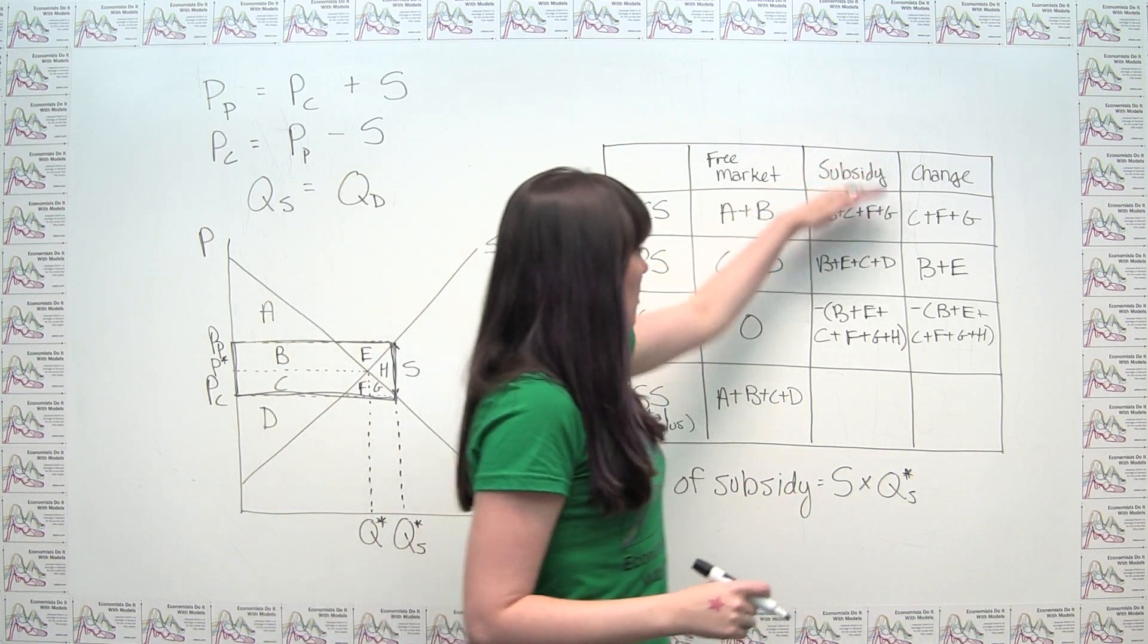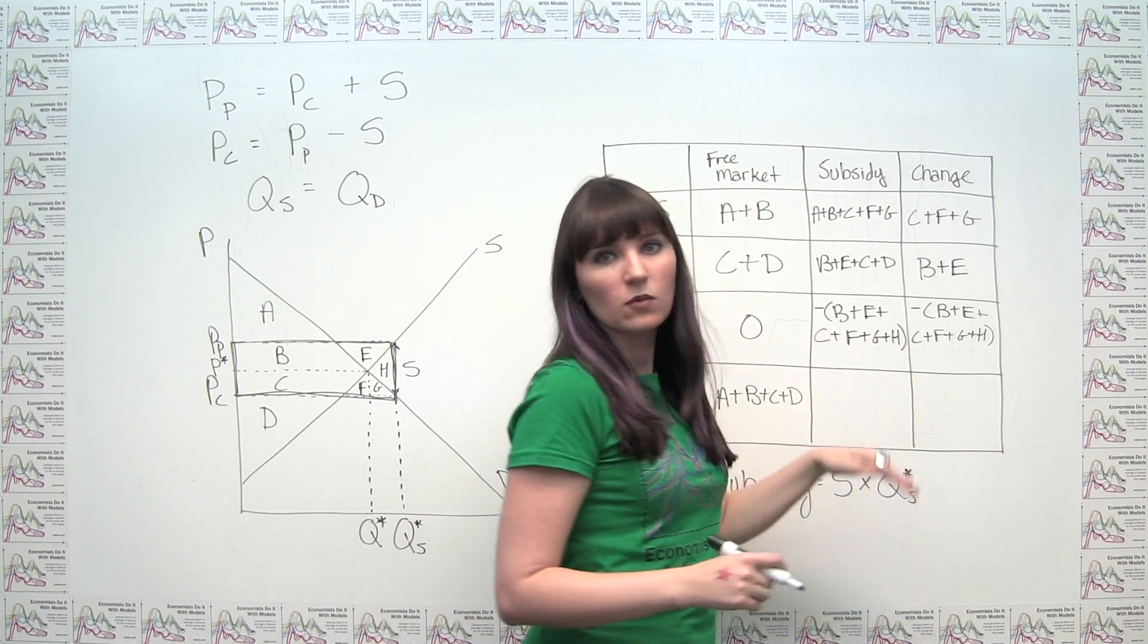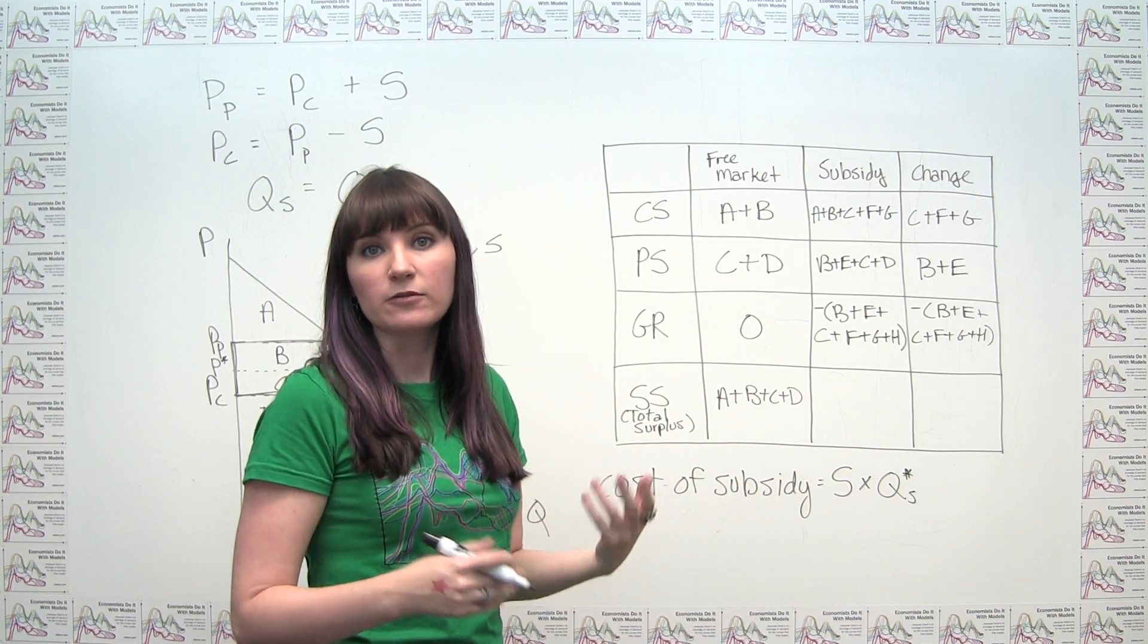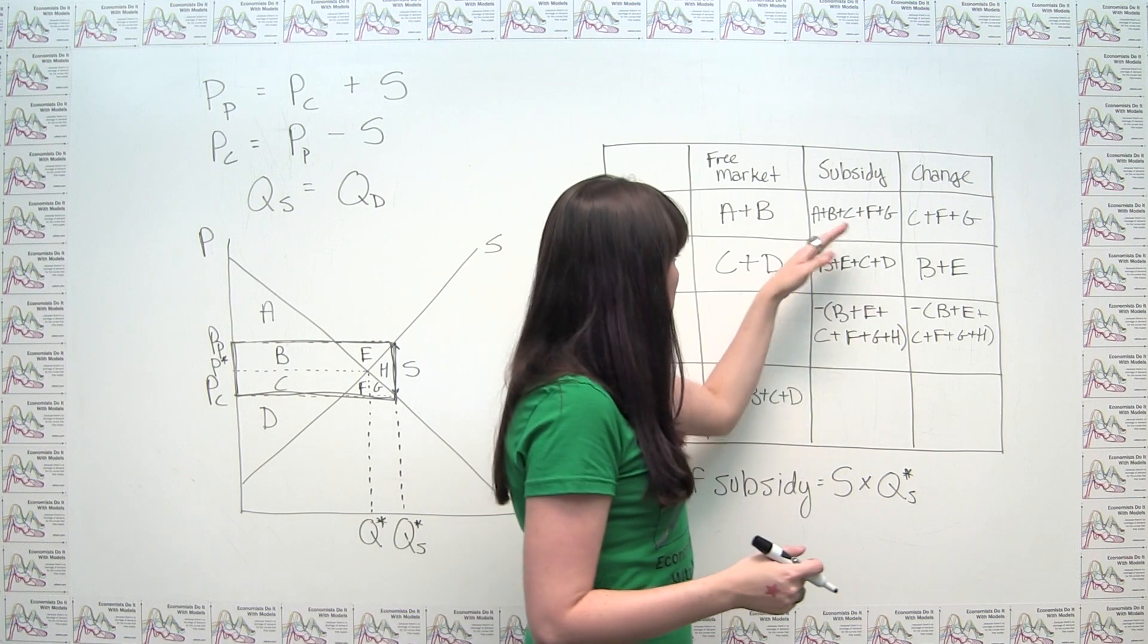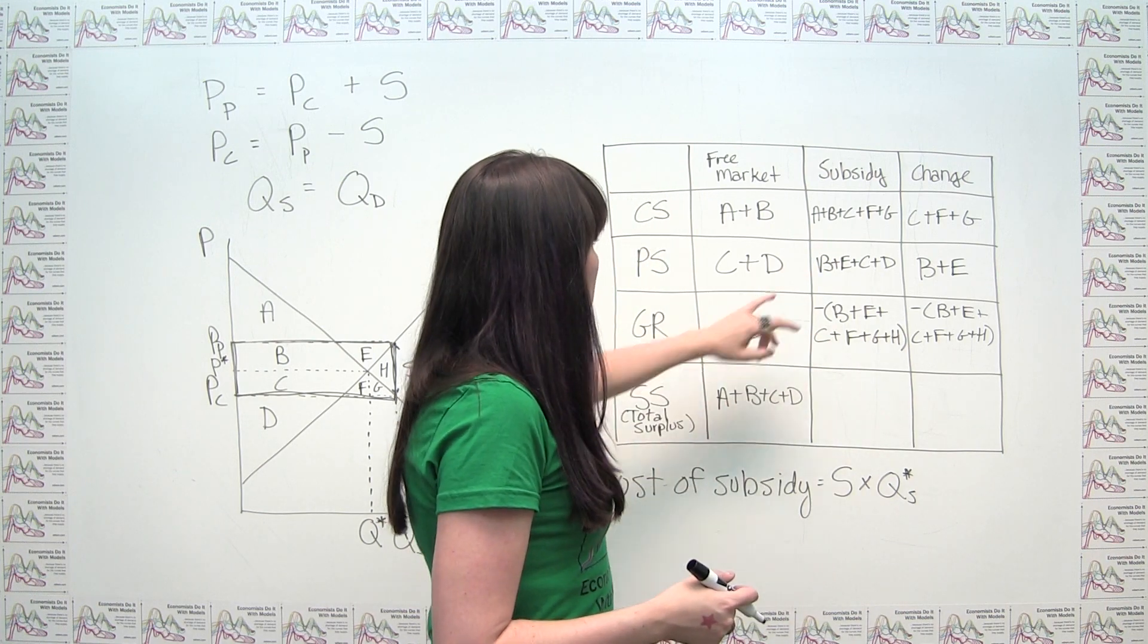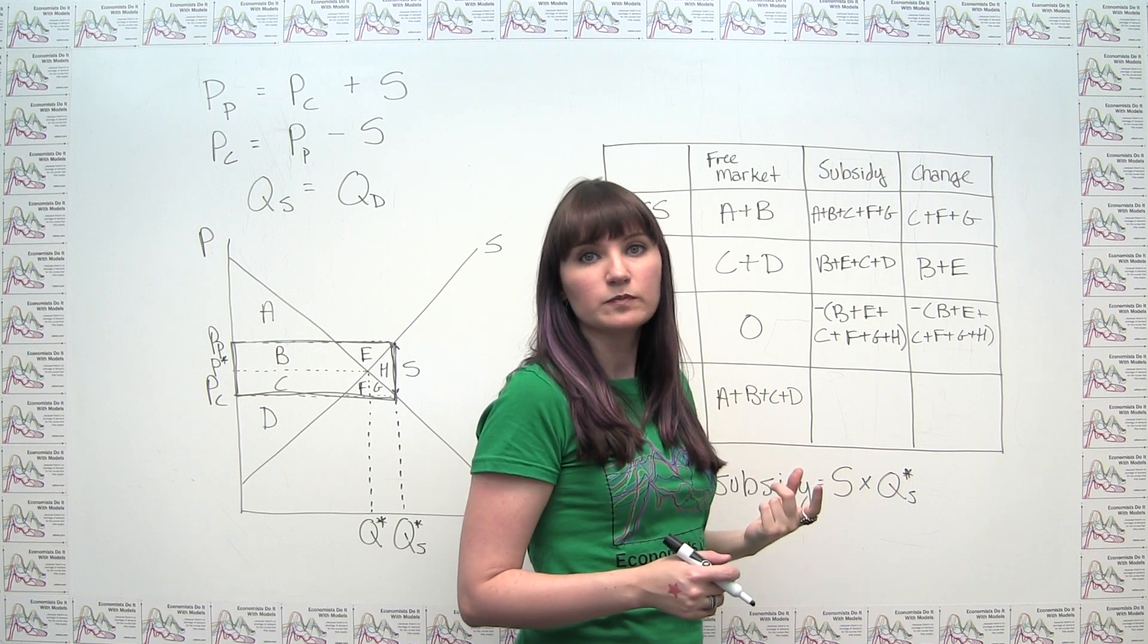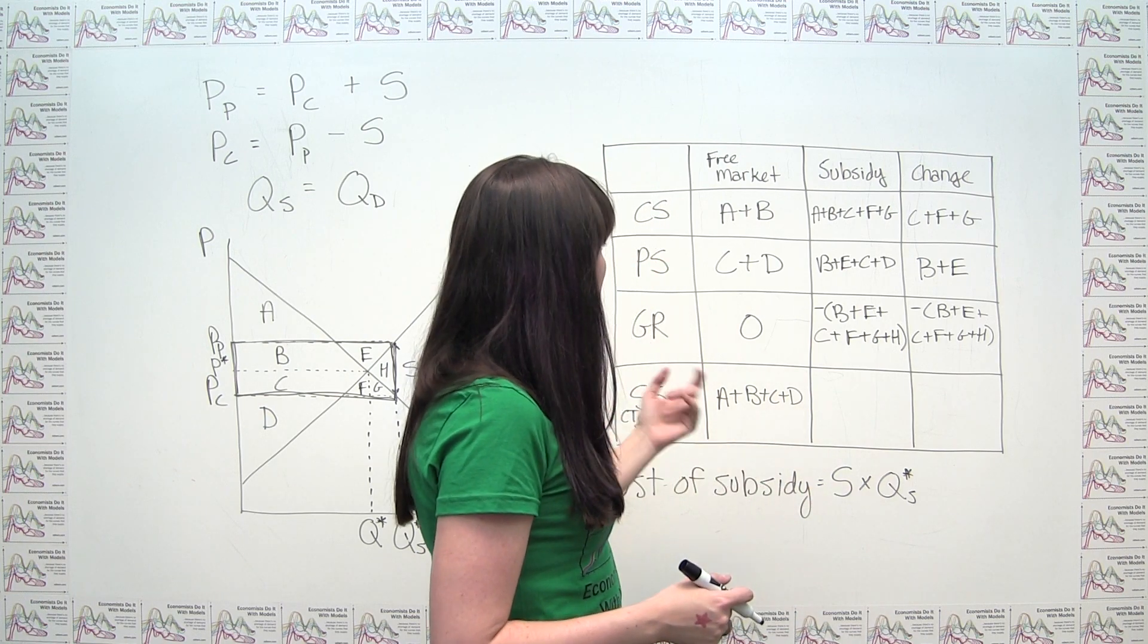And if we were to add all of these up, we could figure out whether society overall is made better off or worse off. So we want to be careful when we're doing this. And the easiest thing to do is actually to go through one letter at a time, so you can put everything in order.